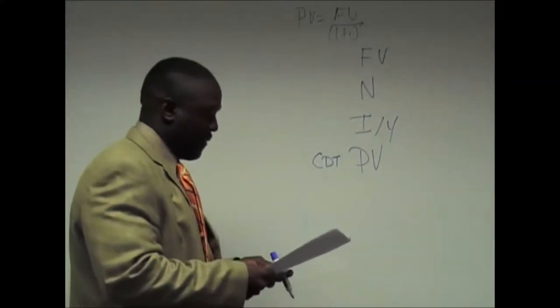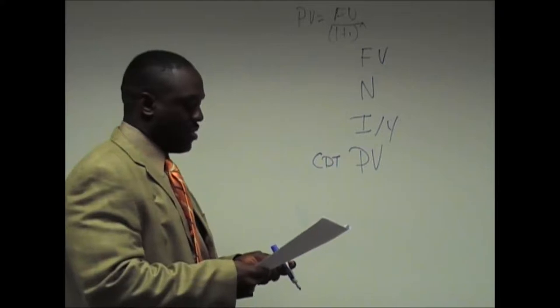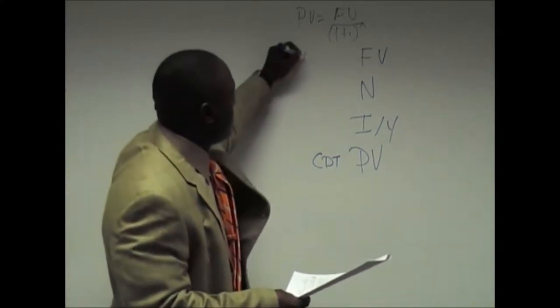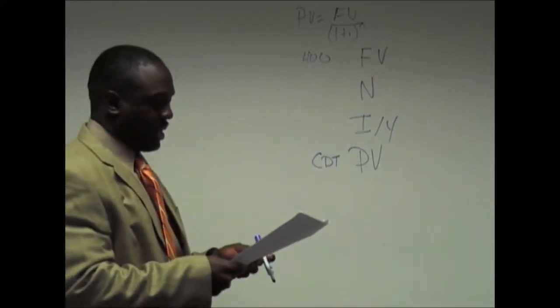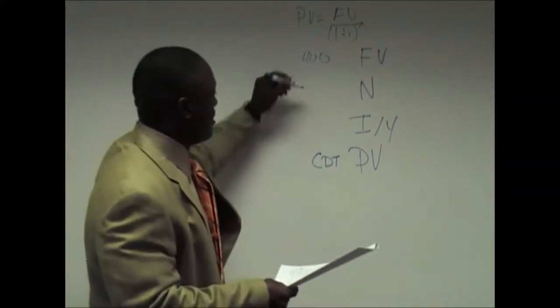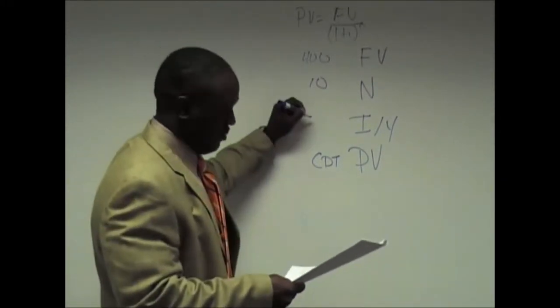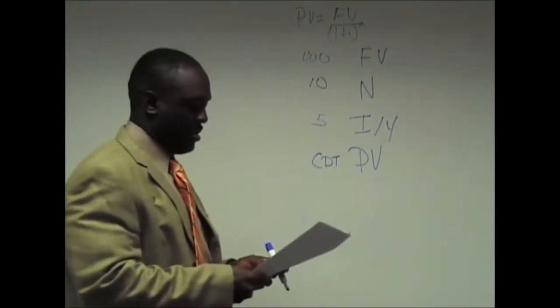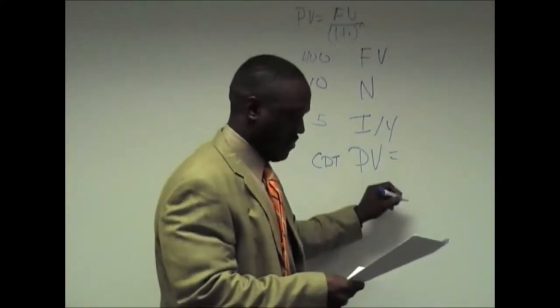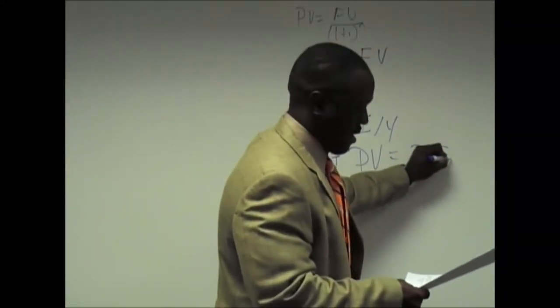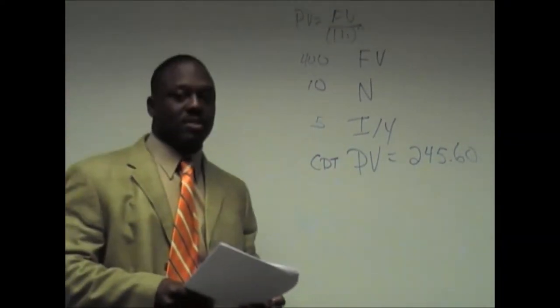The reason why I write the calculator keys after is because with the BA2 plus calculator you have to put the number in and then push the key. I told you the present value of $400 to be received at the end of 10 years if the discount rate is 5%. So $400 is the future value. N is the number of periods. In this case the periods are years, so 10. IY or the discount rate is 5%. You put it in as a whole number and you compute PV. And you should obtain 245.60. And that's how you do the present value of a single amount.